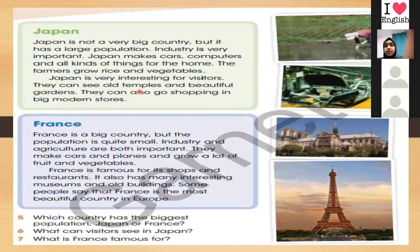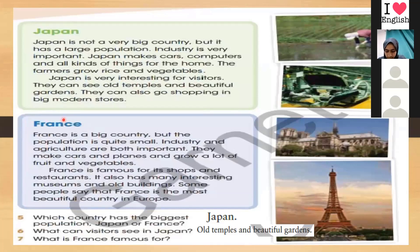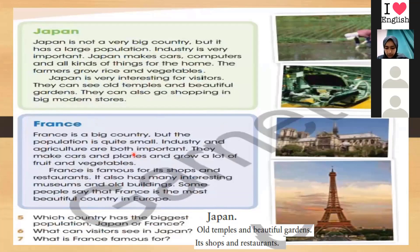Now the questions for Japan and France — questions five, six, and seven. Which country has the biggest population, Japan or France? Japan. Japan has more population than France. What can visitors see in Japan? Old temples and beautiful gardens. What is France famous for? Its shops and restaurants. Do you have any word you don't know, or is everything clear? It's clear.